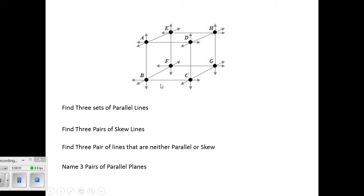And find three sets of parallel lines. So that would be up to you, but I would say what's parallel to CG? Well, DH, and AE, and BF are all parallel, as well as any number of others, you know, AB and EF.